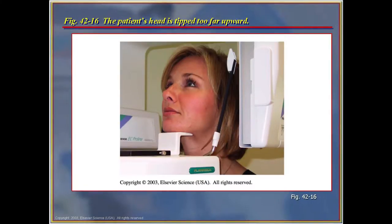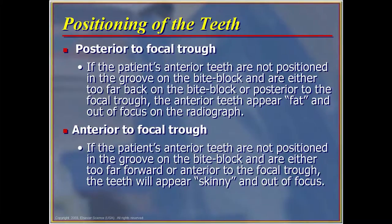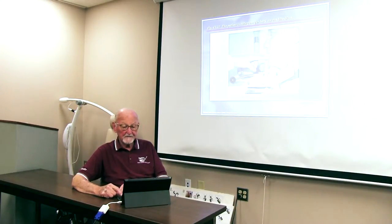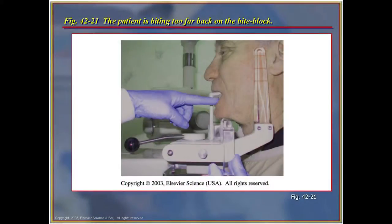Proper patient head placement is critical. If the head is not parallel to the floor, or the lower jaw is positioned inappropriately, the image will be very difficult to read. If the anterior teeth are not positioned correctly in the bite block groove and are too far back or too far forward, the picture will be distorted. Edentulous patients tend to place the bite block too far into their mouth, positioning their head incorrectly and creating distortion.